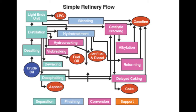The heavy naphtha from the light ends unit goes through hydro-treatment and then reforming to produce another high-octane gasoline stream. Finally, the VDR from the vacuum distillation unit can go through coking to make additional gasoline as well as the byproduct coke.